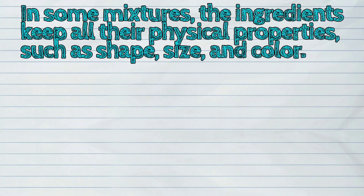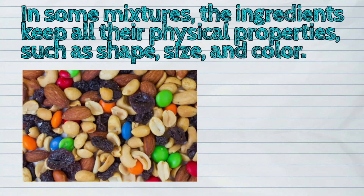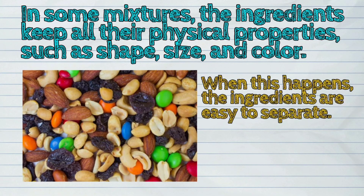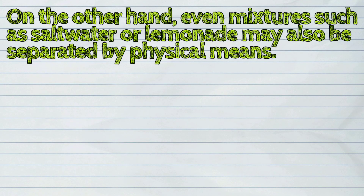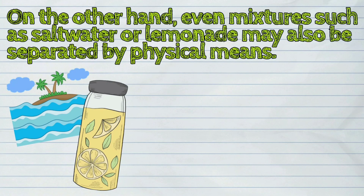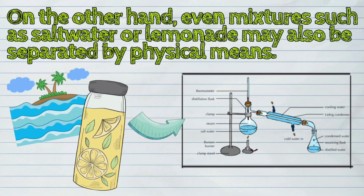In some mixtures, the ingredients keep other physical properties, such as shape, size, and color. When this happens, the ingredients are easy to separate. Like this picture — a mixed bowl of snack. You can use properties like size and shape to separate the nuts, raisins, or the coated chocolates from the mixture. On the other hand, even mixtures such as salt water or lemonade may also be separated by physical means.